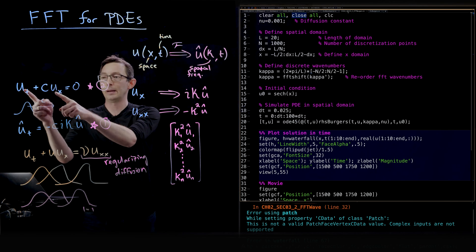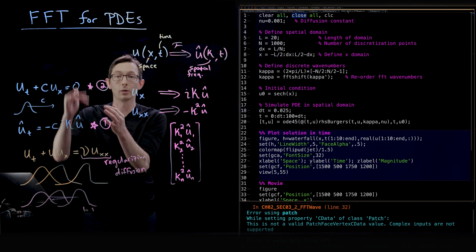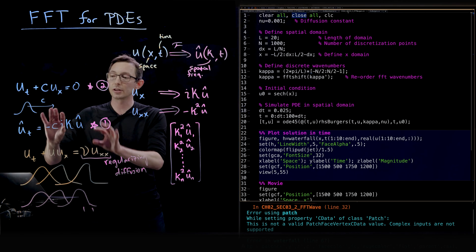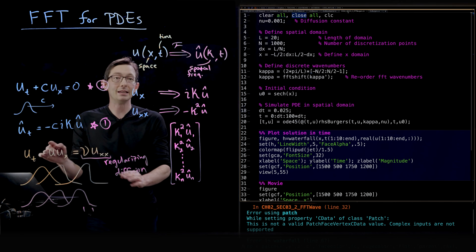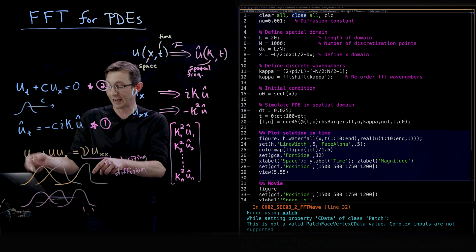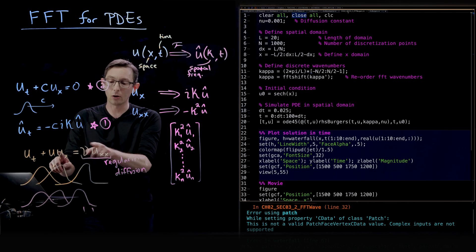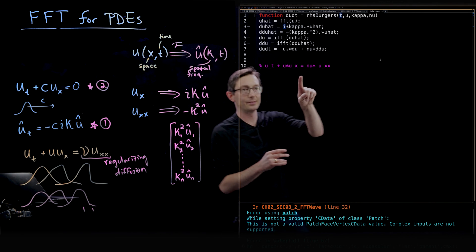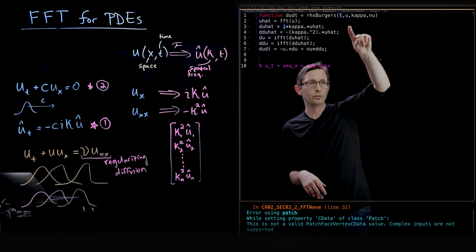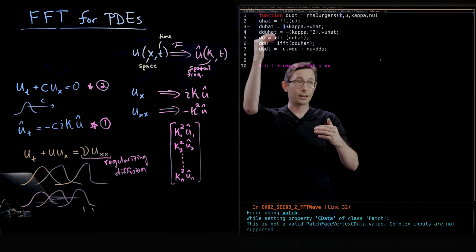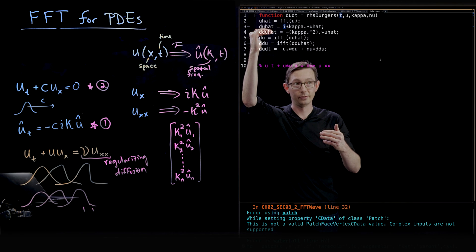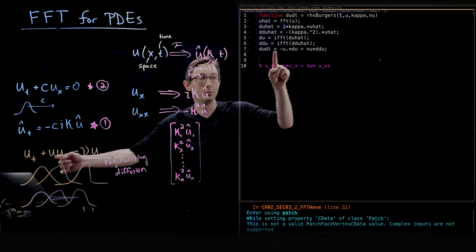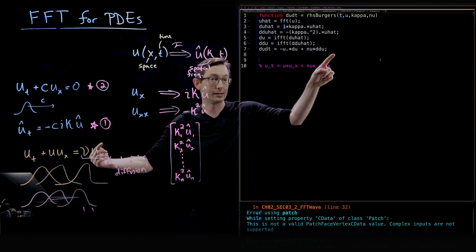We're going to solve Burgers' equation the same way using the FFT, but now I can't work only in the spatial domain or only in the Fourier domain. For example, this nonlinear product u·u_x in the Fourier domain becomes a nasty convolution. So just like the second wave equation example, I'll solve the PDE in the spatial domain with u as my state vector and time-step it using ODE45, but approximate all derivatives using the fast Fourier transform. In the right-hand side function for Burgers': I take u, Fourier transform to get u-hat, compute first and second derivatives du-hat and ddu-hat, inverse FFT those to get u_x and u_xx, and then build the right-hand side: minus u·u_x plus nu·u_xx.